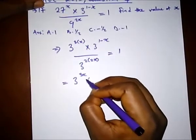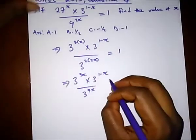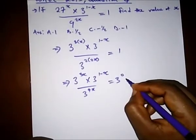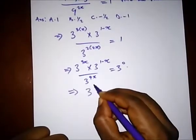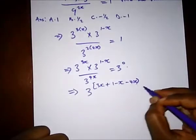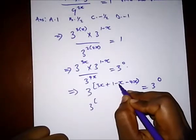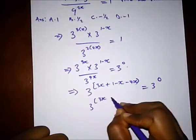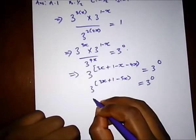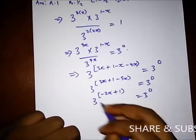Remembering in our law of indices, anything that gives us 1 means the exponent equals 0, so we set 3^(3x + 1 − x − 4x) equal to 3^0. From here we have 3x plus 1 minus x minus 4x, which simplifies to minus 2x plus 1, equal to 3 raised to the power of 0.